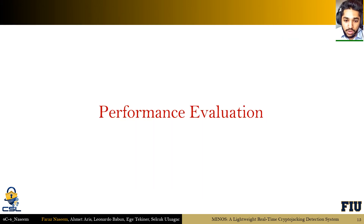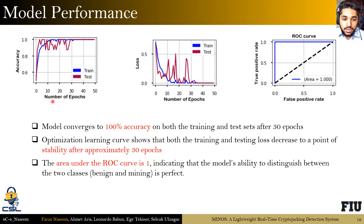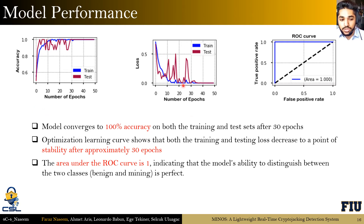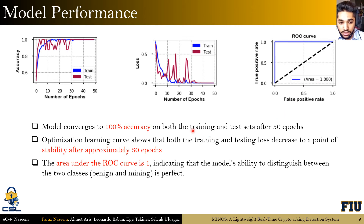In terms of model performance on the training dataset, the model converges to 100% accuracy on both the training and test sets after 30 epochs, using an 80/20 train-test split. In the optimization learning curve, both training and test loss decreased to a point of stability after approximately 30 epochs, consistent with the accuracy results. The area under the ROC curve is 1, indicating the model's ability to distinguish between benign and malicious WebAssembly binaries is perfect.